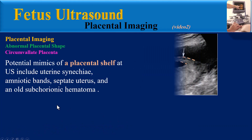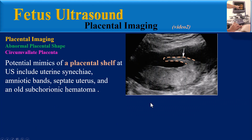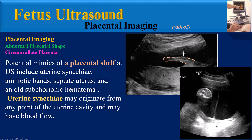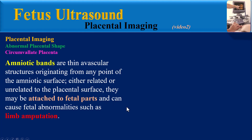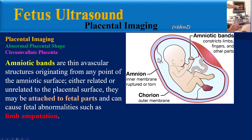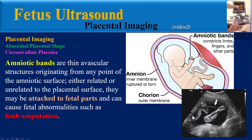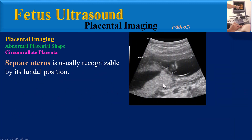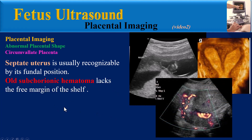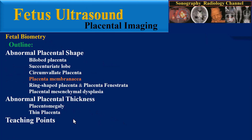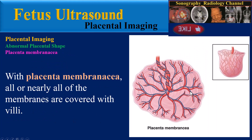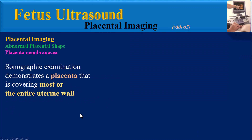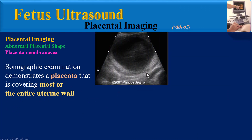Potential mimics of a placental shelf at ultrasound include uterine synechia, amniotic bands, septate uterus, and old subchorionic hematoma. Uterine synechia may originate from any point of the uterine cavity and may have blood flow. Amniotic bands are thin avascular structures originating from any point of the amniotic surface, either related or unrelated to the placental surface; they may be attached to fetal parts and can cause fetal abnormalities such as limb amputation. Septate uterus is usually recognizable by its fundal position. Old subchorionic hematoma lacks the free margin of the shelf.